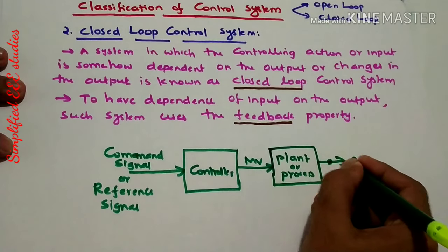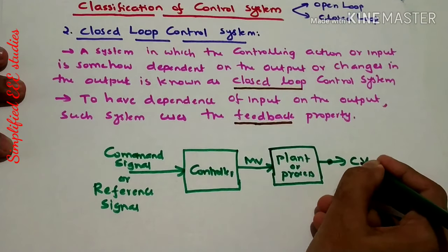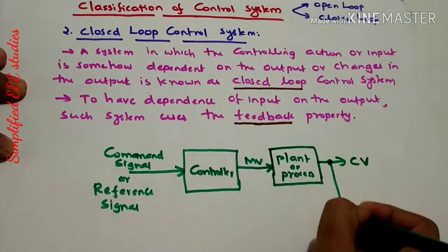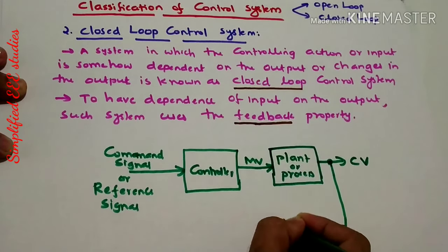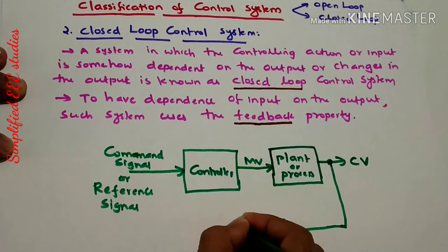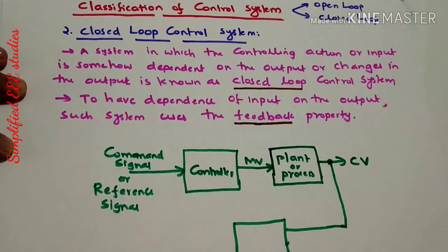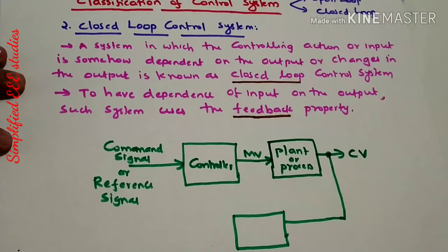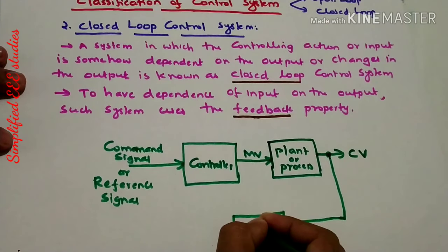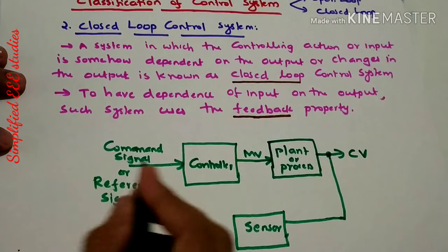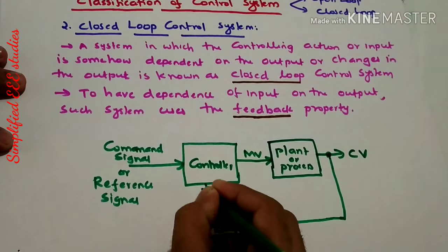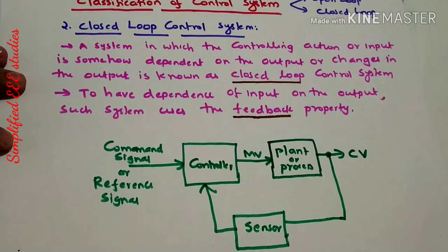The peculiarity of the system is we will be using one feedback element. In order to understand the nature of the output variable, that means the controlled variable, we will be taking one feedback. With the help of a sensor, you can easily understand the nature of the output. I will be connecting one sensor for measurement purpose, and that will be feeding directly to the controller.